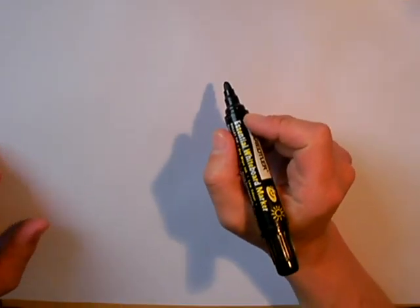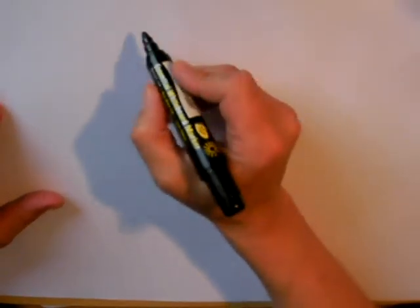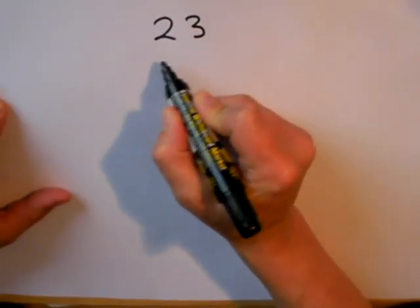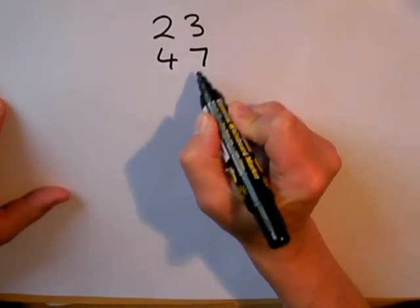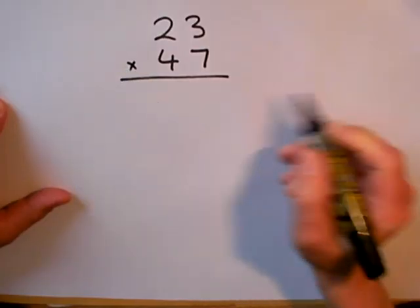I'm going to use long multiplication methods now to work out three examples of multiplication. I'm going to do, firstly, 23 multiplied by 47.